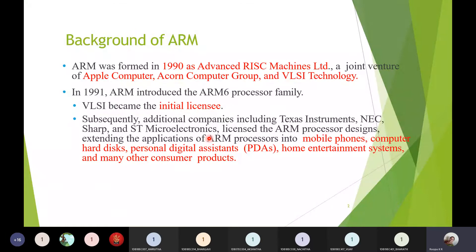A licensed version means the manufacturers are different, but these companies produce under ARM's name. ARM itself does not manufacture processors or sell chips directly. Instead, ARM licenses its processor designs to business partners, and those partners produce and sell the processors while ARM markets them under its brand.